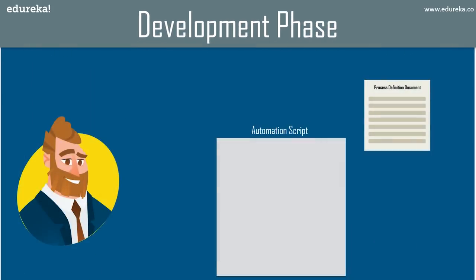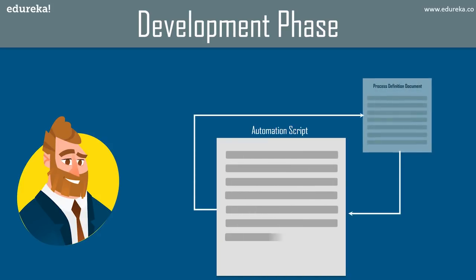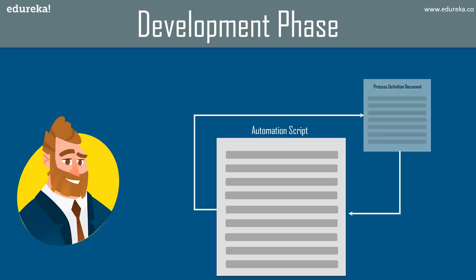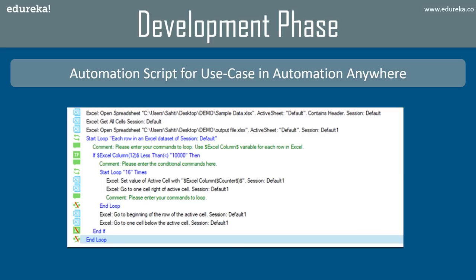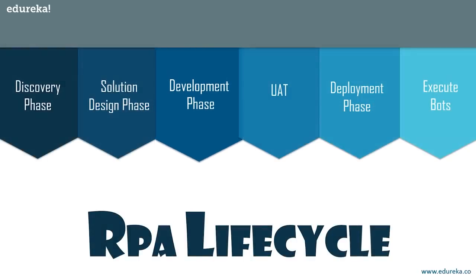Now let's move to the development phase, where the automation is developed. The automation developer refers to the process definition document and starts creating the automation script — basically the workflow of the automation. For our use case, the automation script is visible on screen and I've chosen Automation Anywhere. You can refer to my session on Automation Anywhere examples for a step-by-step walkthrough of how to create this automation using different commands.